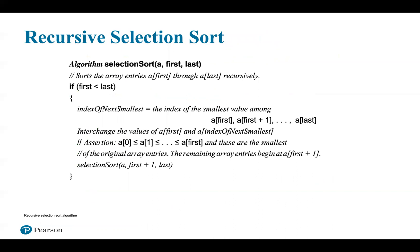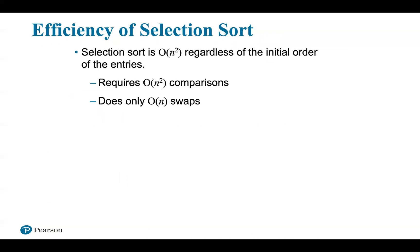Selection sort also has a natural recursive form. Recursive algorithms that involve arrays often operate on a portion of the array using two parameters — first and last — to designate the portion containing entries A[first] through A[last]. The method getIndexOfSmallest in Listing 15.1 illustrates this technique. When implementing the recursive selection sort in Java, the resulting method has first and last as parameters, so its header differs from the iterative version. We could provide a wrapper method to simply invoke the recursive method.